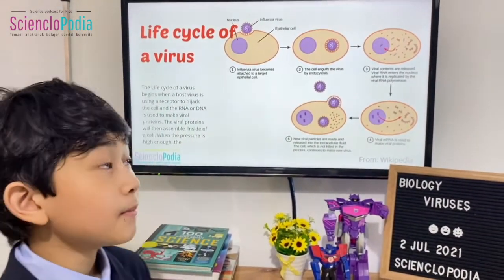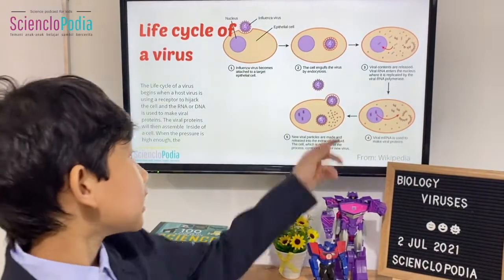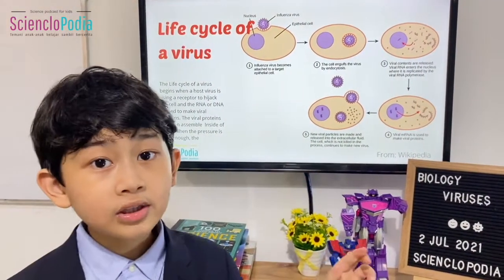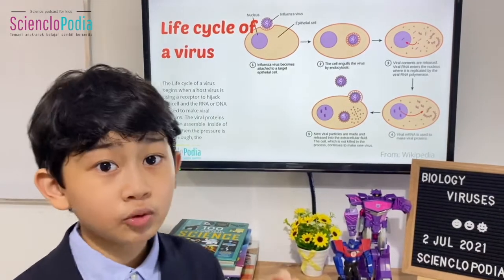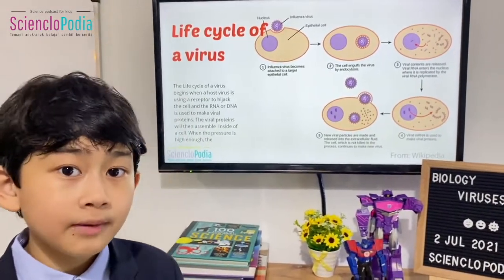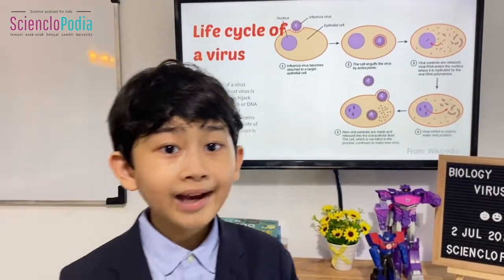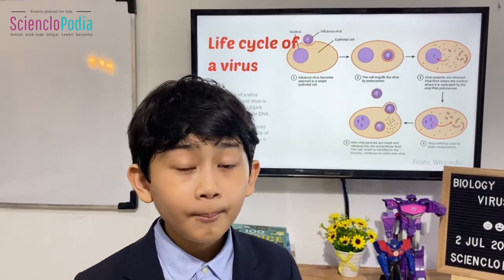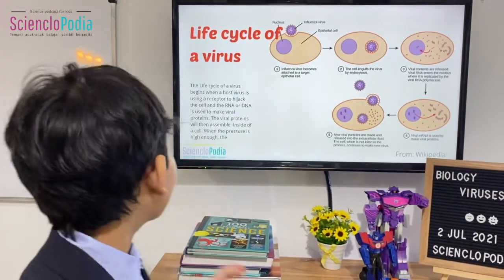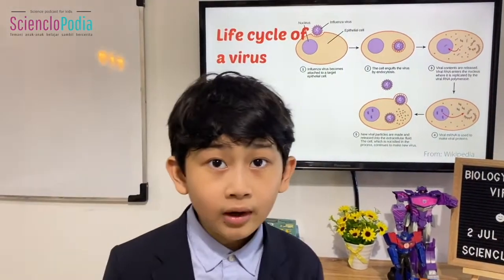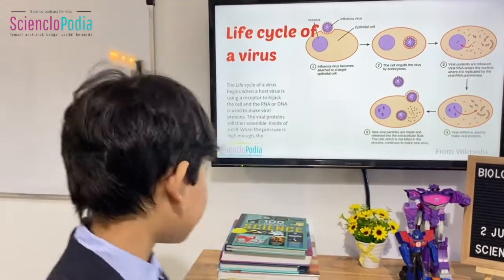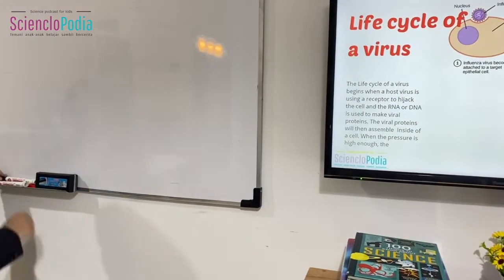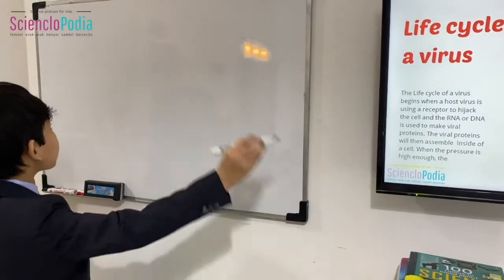What makes viruses really deadly is that they can infect and kill lots of cells, because viruses replicate with every cell they meet. The symptoms — how sick you are — are based on how many cells the virus encounters.